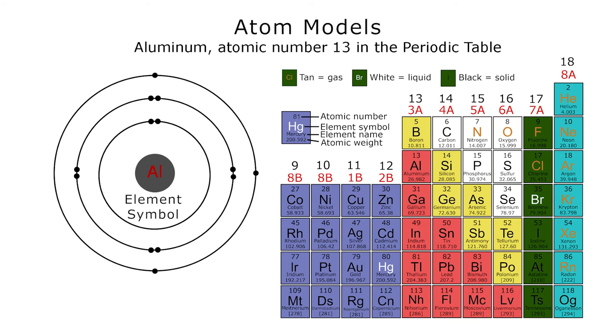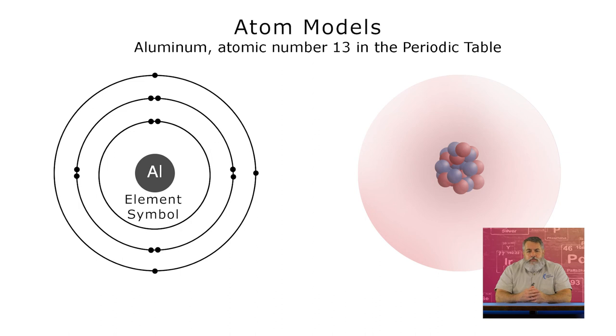If you go to the periodic table and find element 13, you'll see the big AL in the middle of the box. That's aluminum's symbol. The electron shells are represented by the circles around the nucleus, with the first circle being the first shell, the second circle being the second shell, etc.